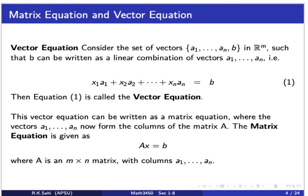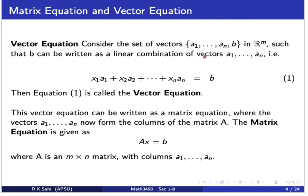Now let's look at a matrix equation and a vector equation. A vector equation involves vectors a1 to an and b in R^m, such that b can be written as a linear combination: x1*a1 + x2*a2 + ... + xn*an = b. We've also learned that every vector equation can be written as a matrix equation Ax = b, where the matrix A is m by n with columns a1 to an.